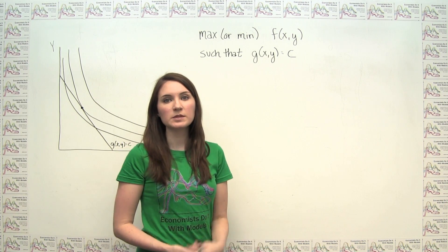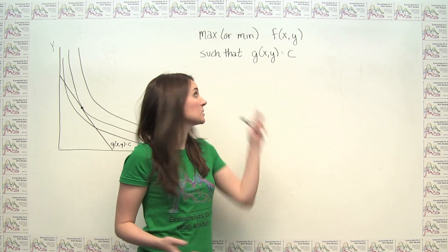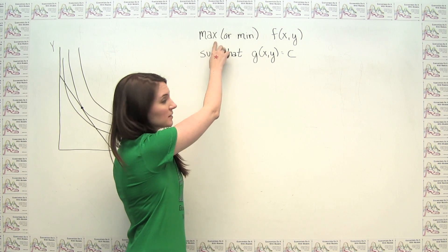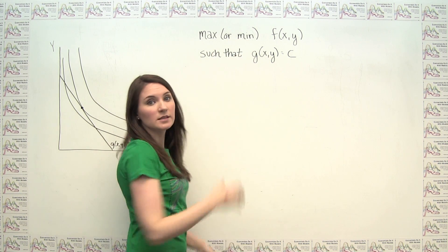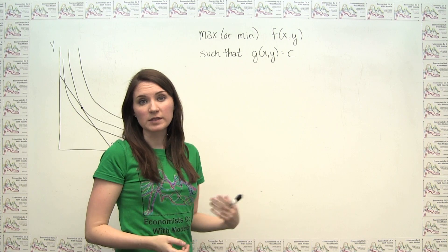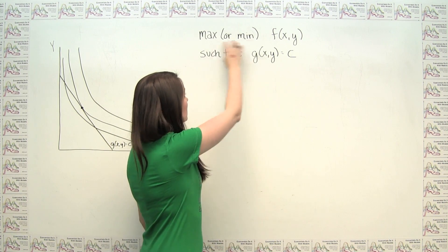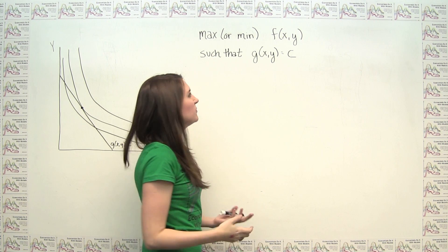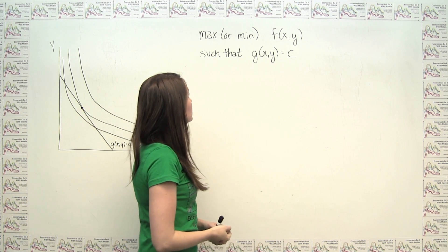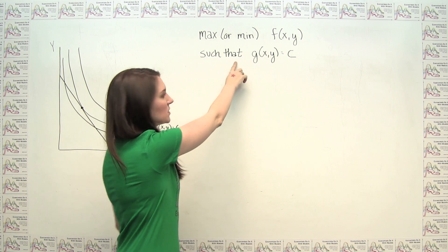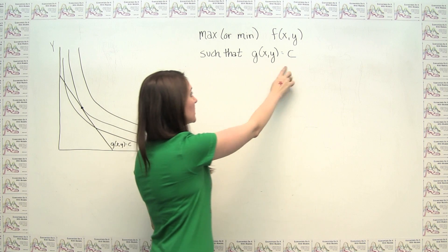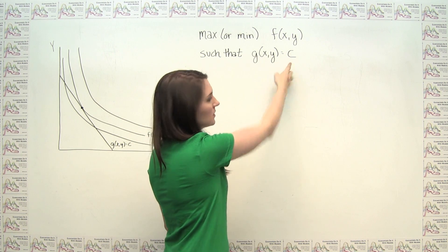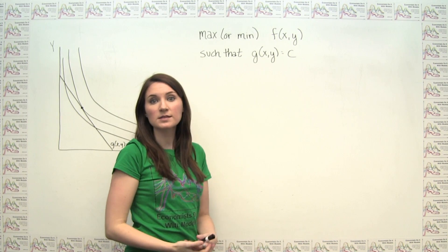A typical constrained optimization problem looks like this: we're trying to maximize or minimize some objective function f(x, y), such that we're subject to the constraint that some function g(x, y) has to equal some constant C.